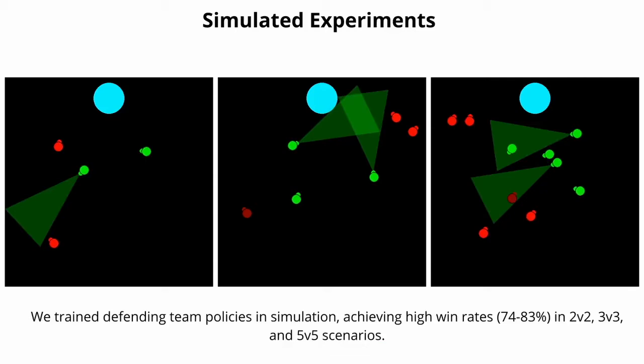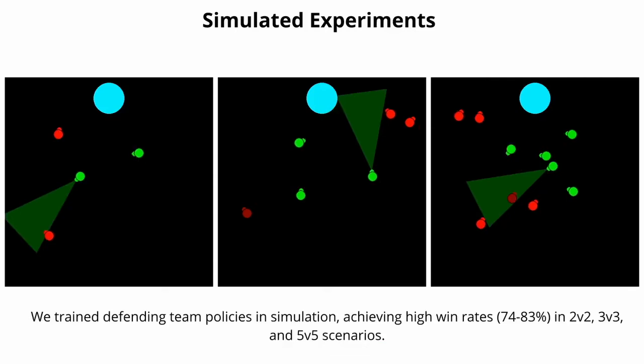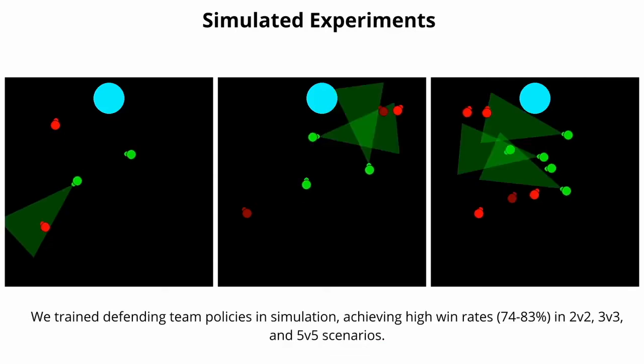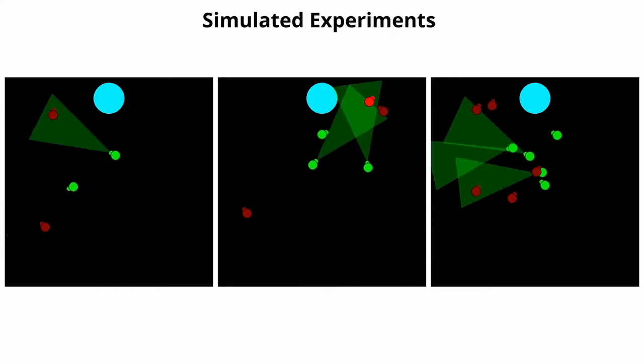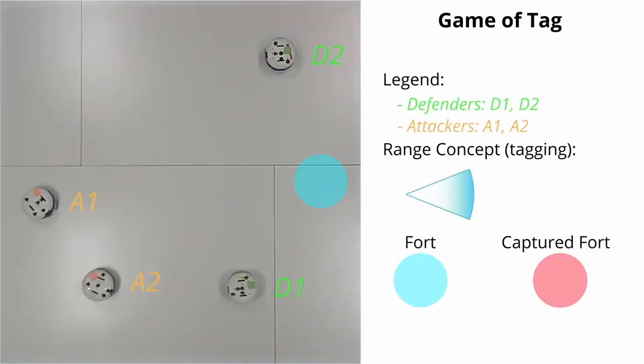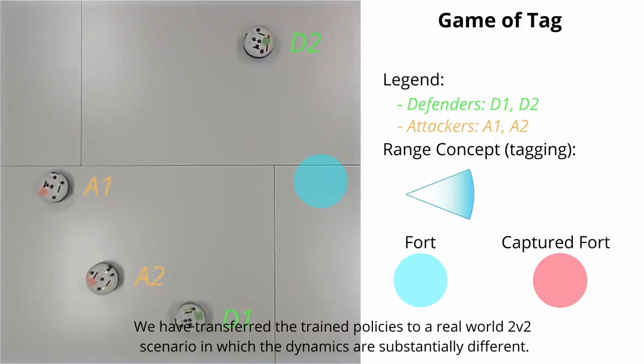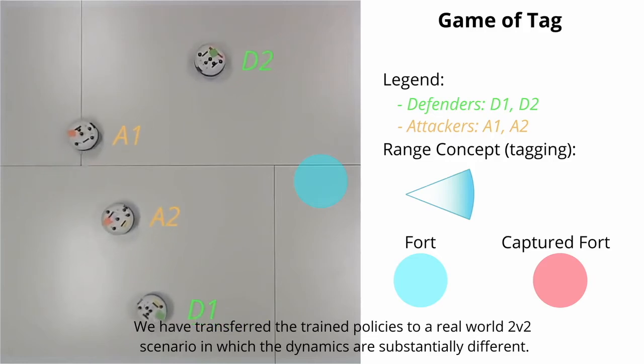We train defending team policies in simulation, achieving high win rates of around 74% to 83% in 2v2, 3v3, and 5v5 scenarios. As you can see here, we have transferred trained policies to a real-world 2v2 scenario, in which the dynamics are substantially different.